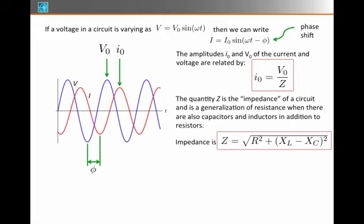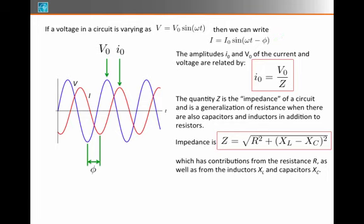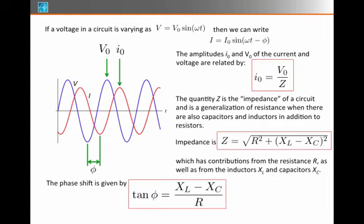The general form for impedance is the square root of R² plus (X_L - X_C)². The resistance is one part of the impedance.